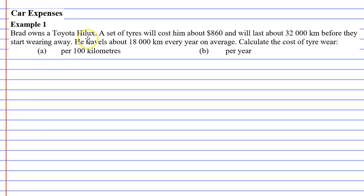Brad owns a Toyota Hilux and a set of tyres will cost him about $860 and will last about 32,000 kilometres before they start wearing away. He travels about 18,000 kilometres every year on average and we're going to calculate the cost of tyre wear in two parts.